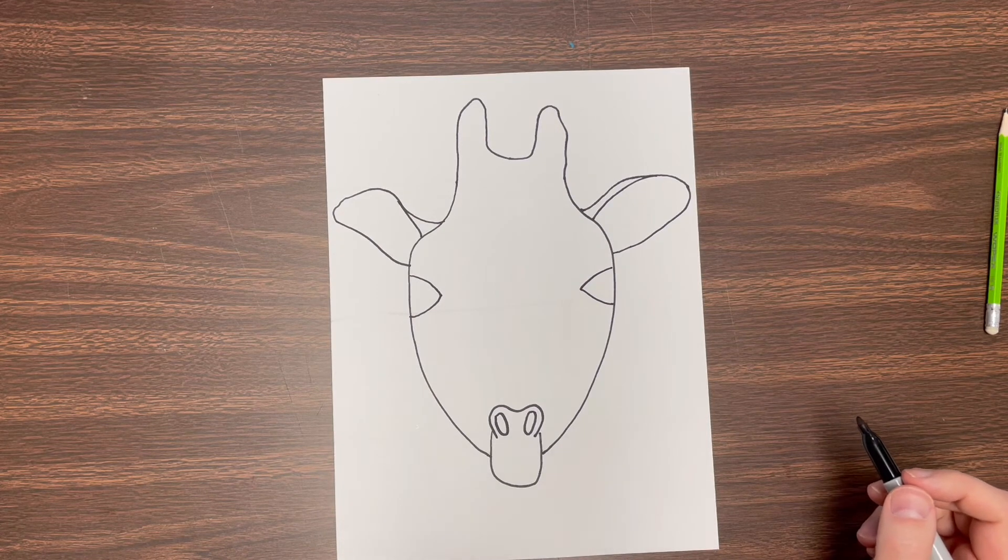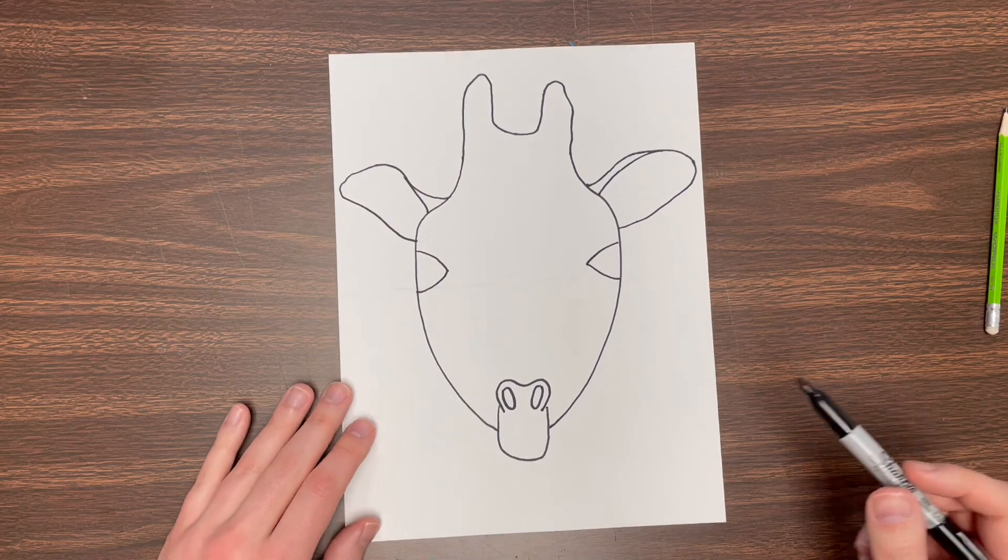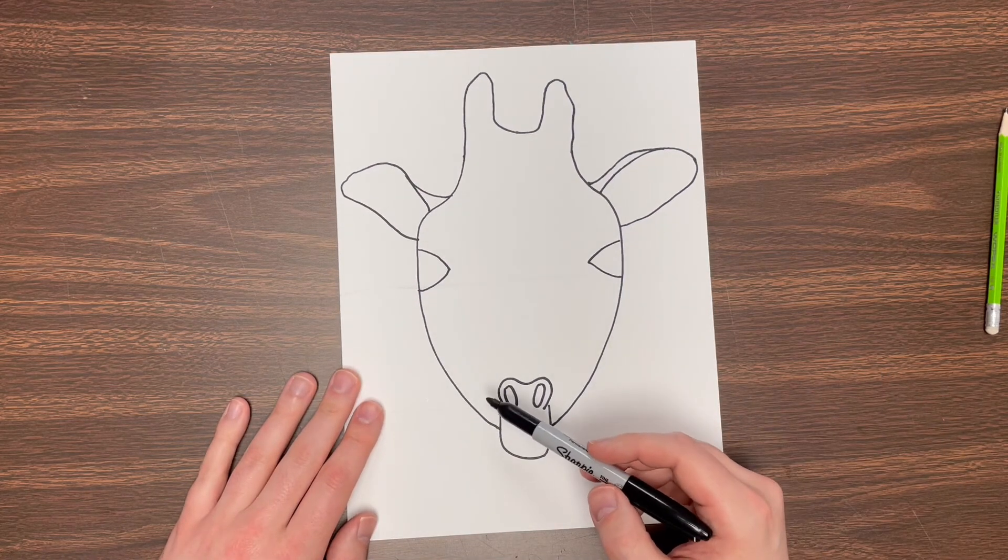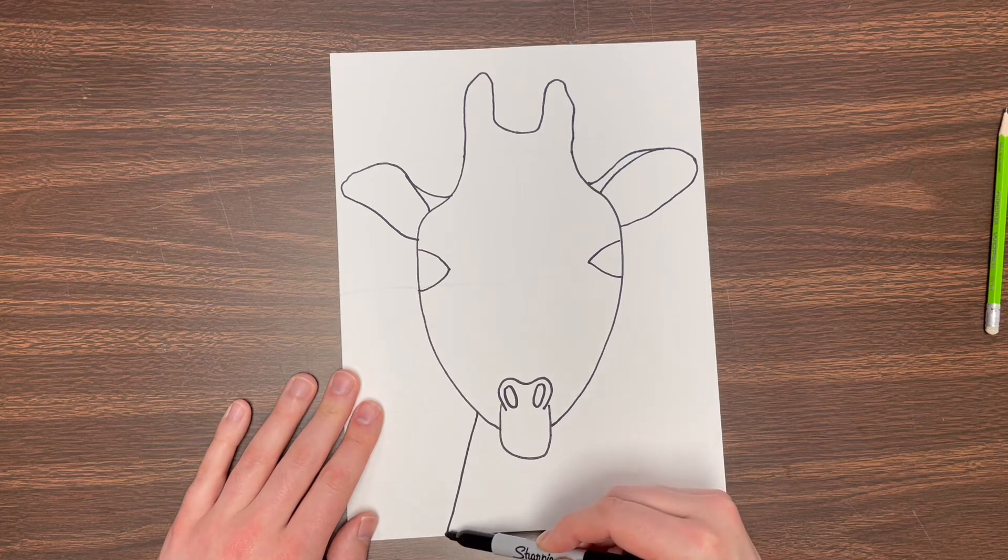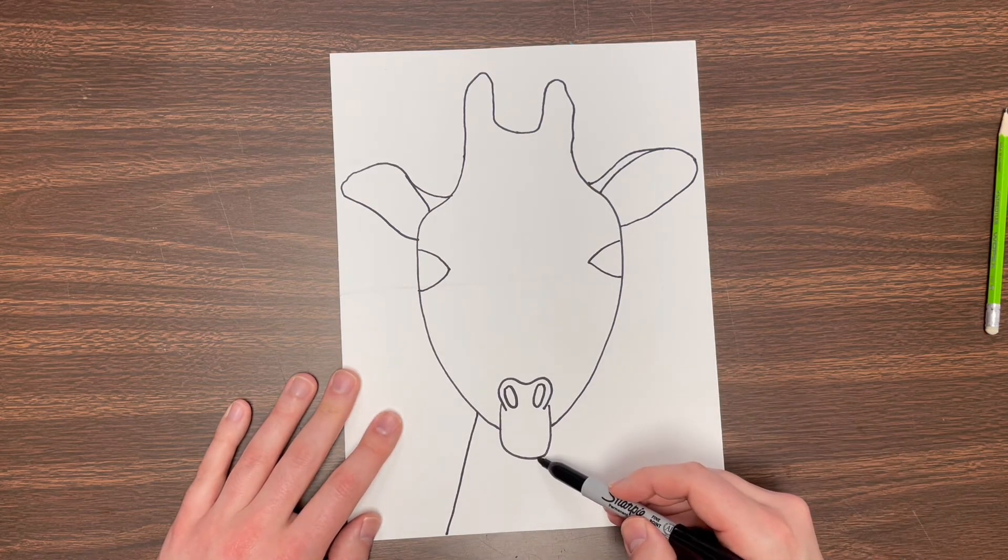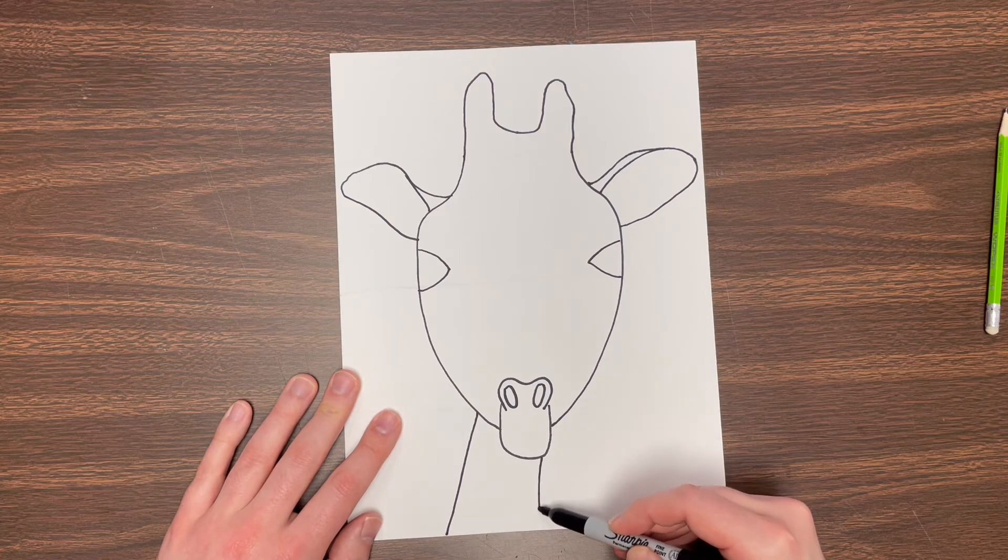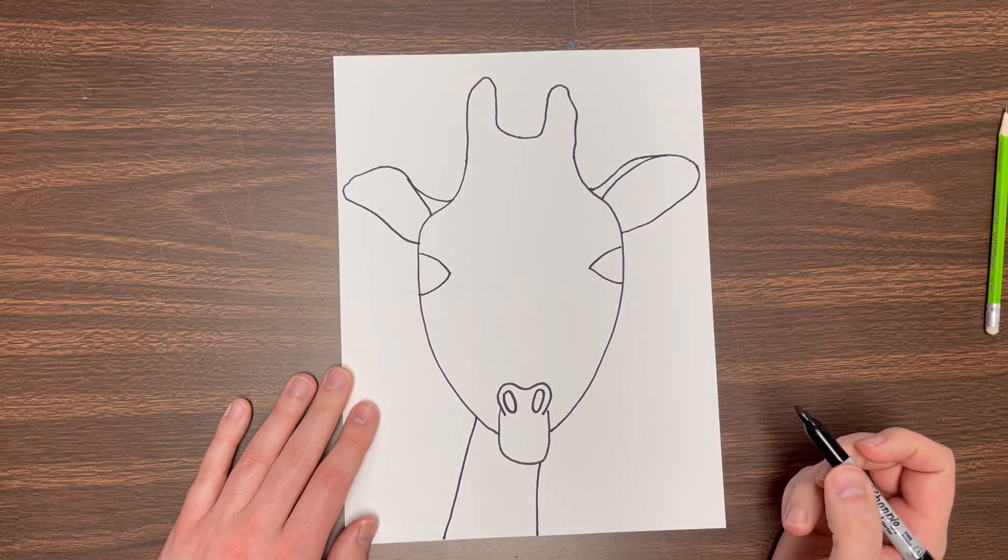After we've done that, I am going to add the neck which will come down here. I'm gonna make it a little bit diagonal so it's kind of leaning off to the side there just like that.